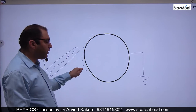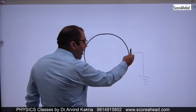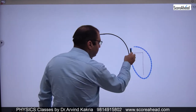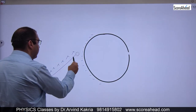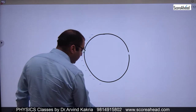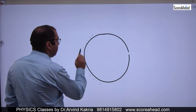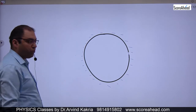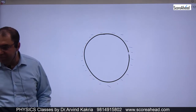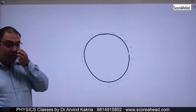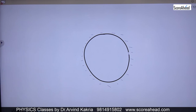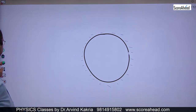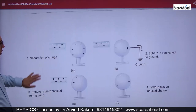The electrons on the near side are attracted by the positive rod and won't move. Once you remove the earth connection and then remove the rod, the negative charge distributes uniformly across the body. So the body permanently acquires a negative charge — even though you never touched it with the rod. This is called charging by induction.